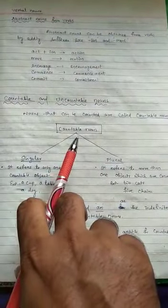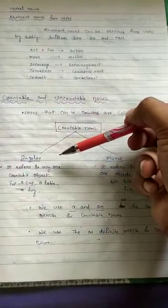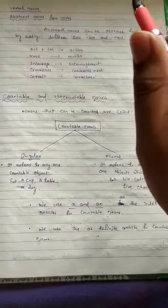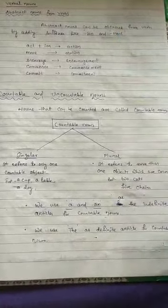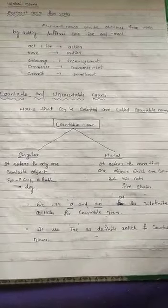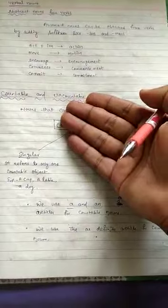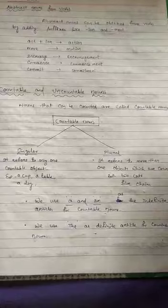Countable nouns are of two types: singular noun and plural noun. Singular means it refers to only one countable object. If the countable objects are more than one, it is called plural. For example, 'chair' is singular and 'chairs' is plural — we add 's' to make it plural.